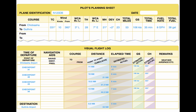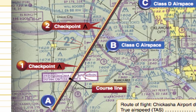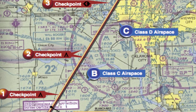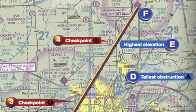For this trip, four checkpoints have been selected. Checkpoint one consists of a tower located east of the course, further identified by the highway and railroad track which almost parallels the course. Checkpoint two is an obstruction just to the west of the course, further identified by Will Rogers World Airport directly to the east. Checkpoint three is Wiley Post Airport, which the aircraft should fly directly over. Checkpoint four is a private, non-surfaced airport to the west of the course, further identified by the railroad track and highway to the east.